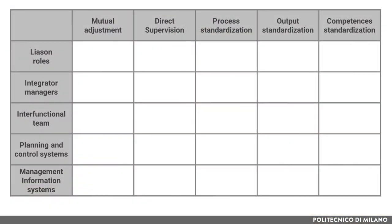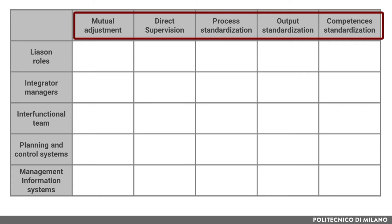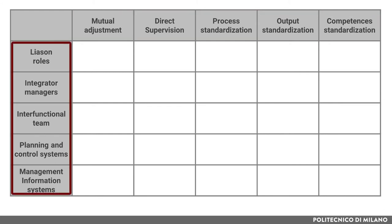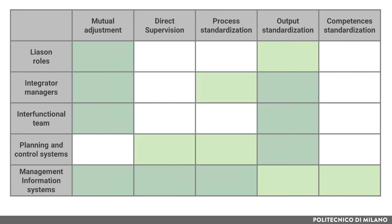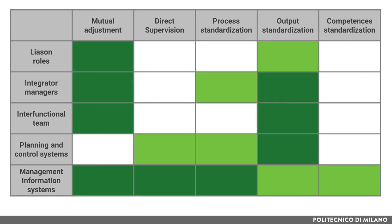To conclude, we must remind that coordination mechanisms at the micro level and coordination mechanisms at the macro level can and should exploit synergies among them. In particular, the table helps us to recap which are the most useful coordination mechanisms at the micro level for coordination at the macro level, with the dark green intersection showing a strong synergy and the light green intersection showing a less strong but still useful synergy among the different micro and macro coordination mechanisms.